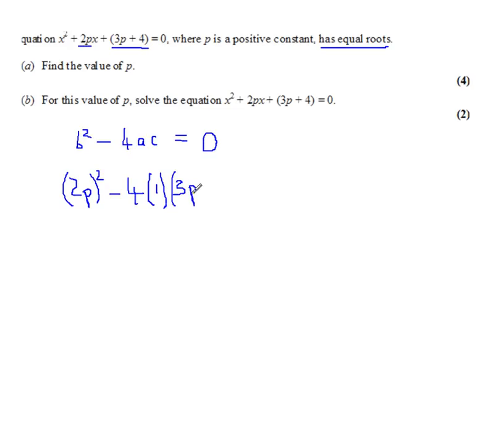So that whole thing equals 0. And now all we've got to do is sort that out and solve it for p, and it should be a quadratic in p. Now, that lot equals 0. So let's multiply all this out and see what we get. 2p all squared is 4p squared, be careful with that. So we've got 4p squared. And this becomes minus 4 times 3p is minus 12p. And minus 4 times 4 is minus 16. And that is 0.